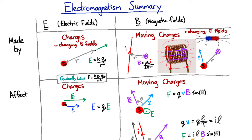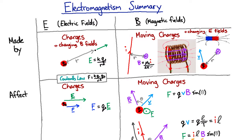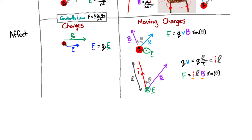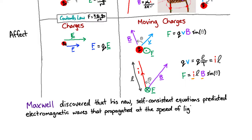So the fields themselves would make one another in an unending wave that would just head off into the distance. And he carefully worked out the speed of that wave, and he discovered that the speed of that wave was the speed of light.